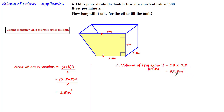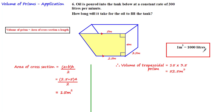Now that we have the volume, we need to find how long it takes for 300 liters per minute to fill it. Since liters and meters cubed are both units of volume, we need to convert. Using the fact that 1 meter cubed equals 1000 liters, 52.5 meters cubed equals 52,500 liters.